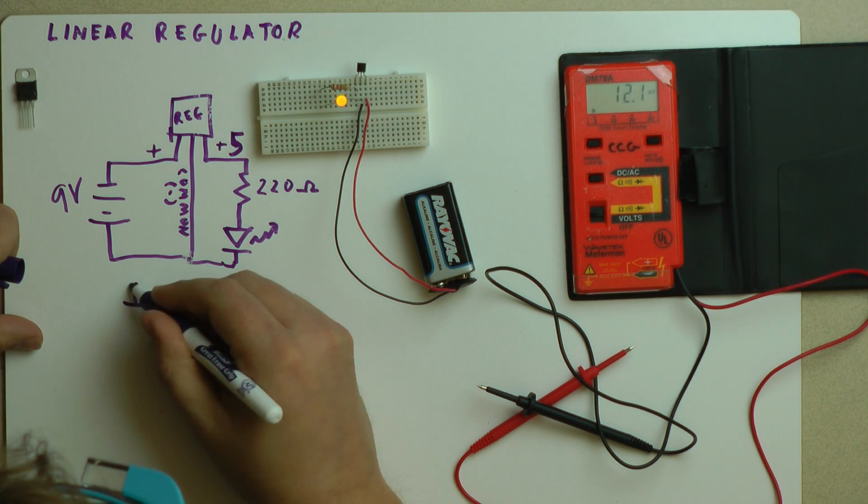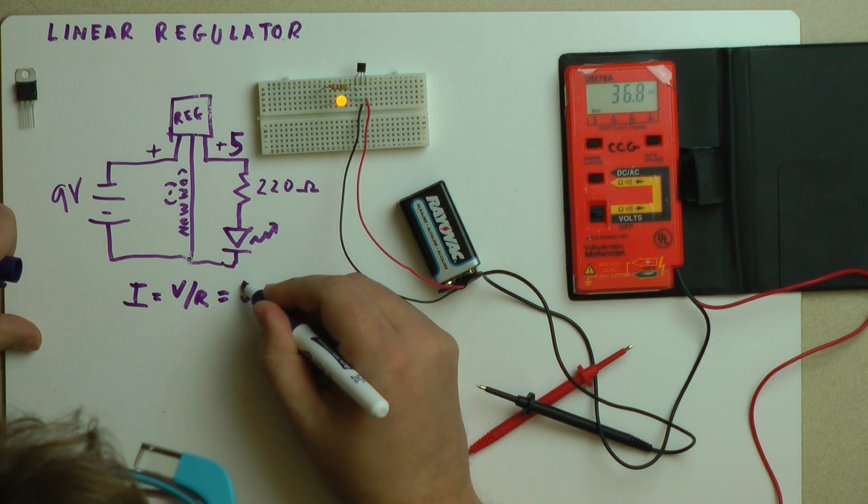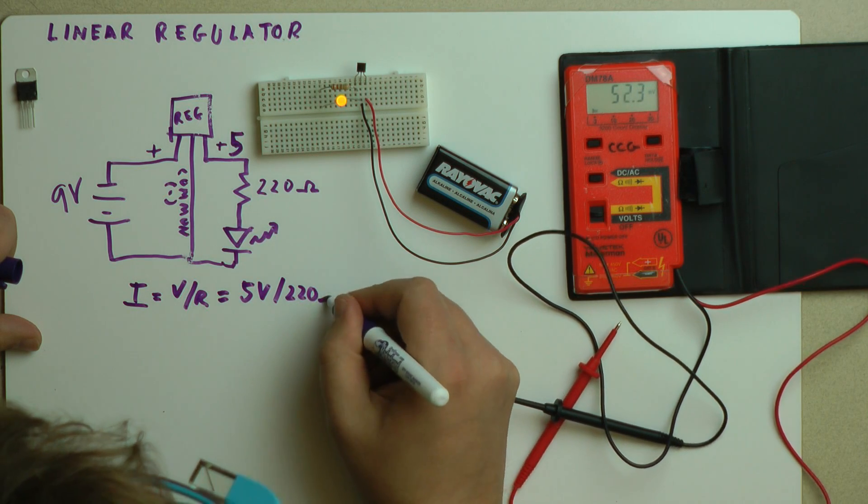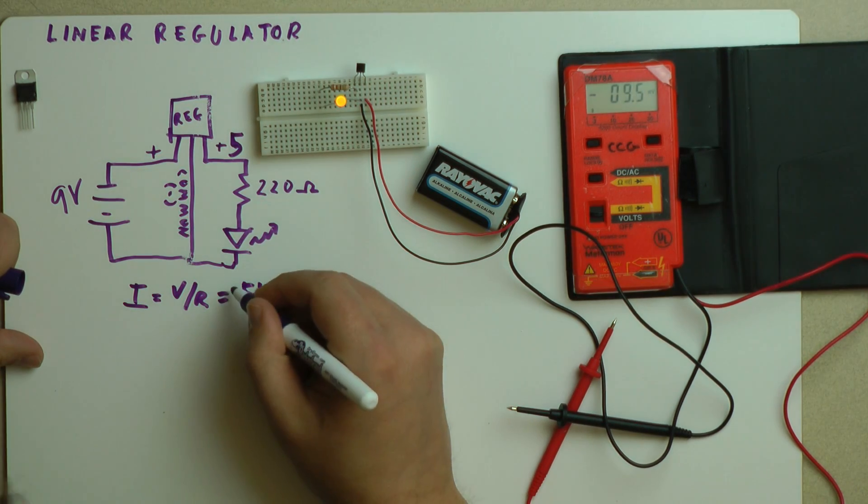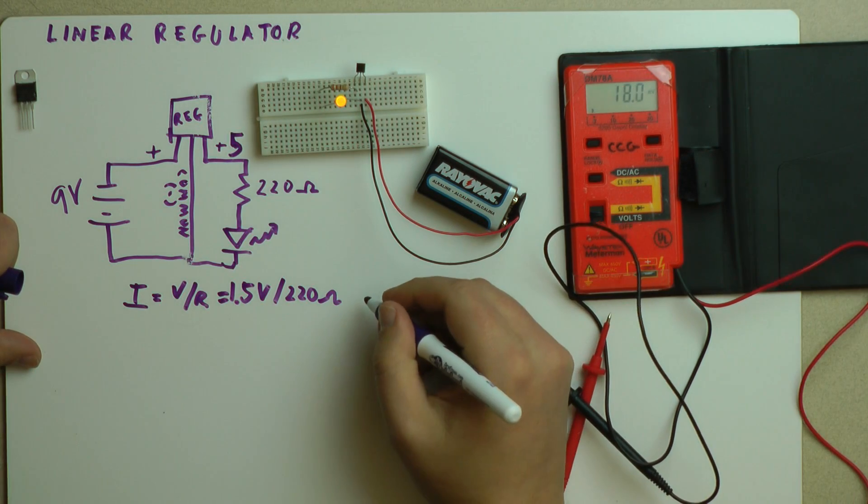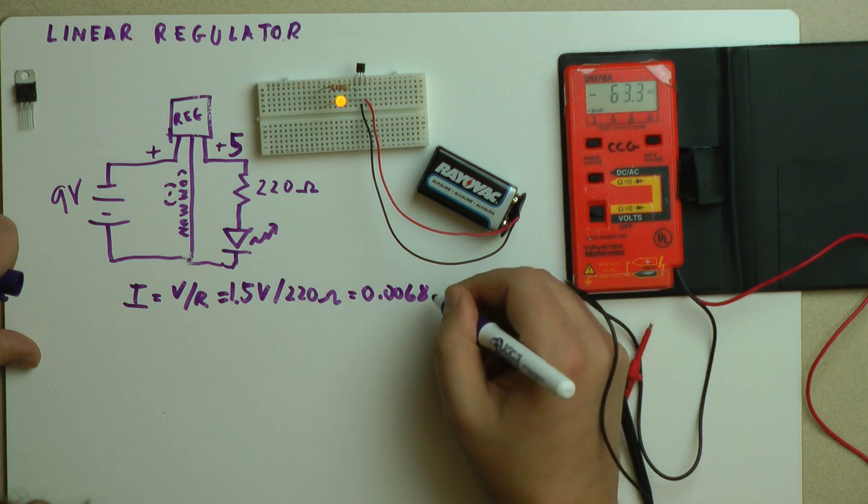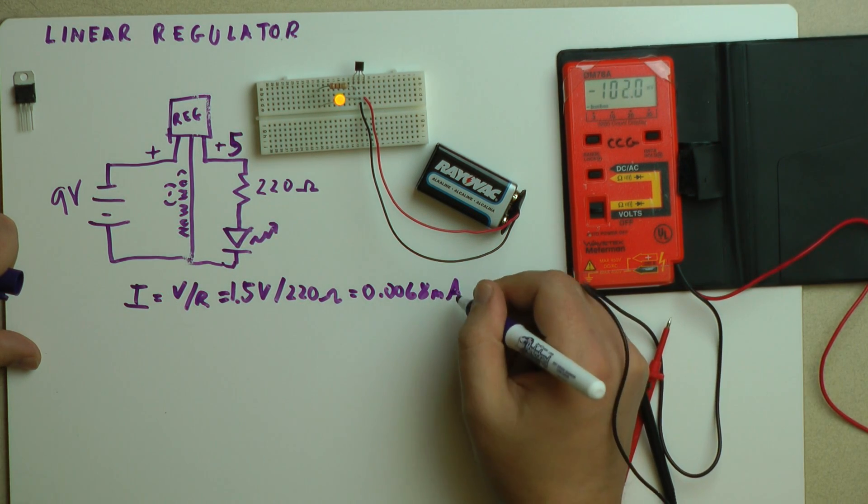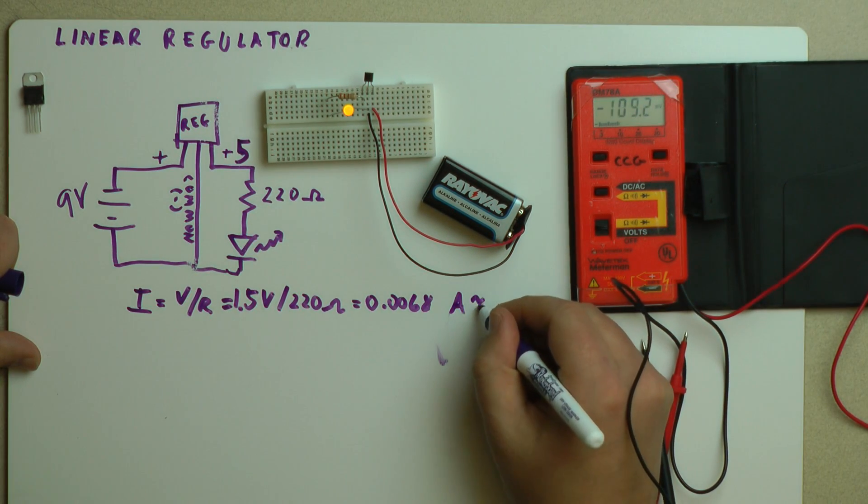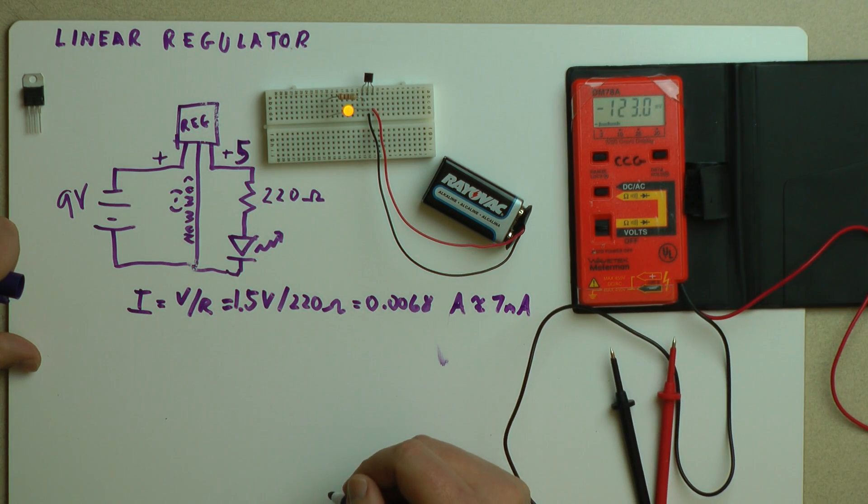But from that, I can get the current on that side of the circuit. So we know that I equals V over R, which equals 5 volts over 220 ohms, which is equal to 0.0068 amps. And that's approximately equal to 7 milliamps. That'll make this a little more convenient.